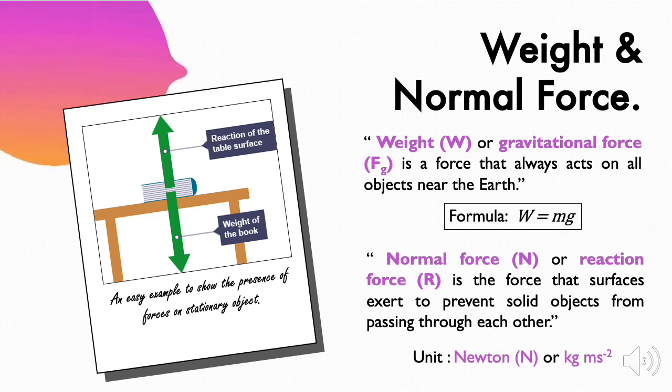Second type of force is normal force. Normal force, or reaction force, is the support force that surfaces exert to prevent solid objects from passing through each other. For example, if a book is resting upon a surface, then the surface is exerting an upward force upon the book in order to support the weight of the book.